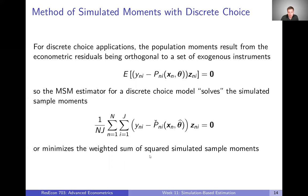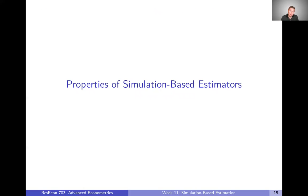These simulation-based estimators look very similar to their non-simulation-based analogs — the traditional estimators we've already talked about. We're just plugging in simulated choice probabilities in place of actual choice probabilities when working through these estimators. In different settings, you might have different objects that need to be simulated rather than choice probabilities, but the basic logic is the same. In the next video, we're going to talk about the properties of these simulation-based estimators and how they differ from the traditional estimators we're more used to.